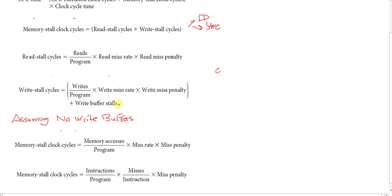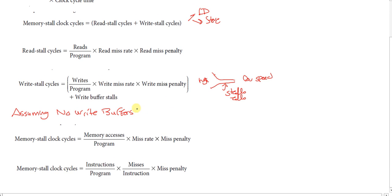A buffer is like a funnel — it takes flow from a high-speed thing, which is the cache, to a low-speed thing, which is the memory. The stalls occur when the buffer is full. If we assume there is no write buffer, the memory stall clock cycles would be the memory accesses per program, times the miss rate, times the miss penalty — whether it's read or write.